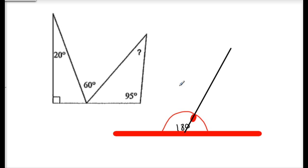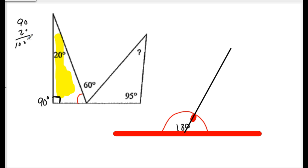Let's look at the first highlighted triangle — angles one, two, and three. The right angle at the corner is 90 degrees, and we have 20. Adding 90 and 20 gives 110, so the missing angle is 70 degrees. So this angle here is 70 degrees.